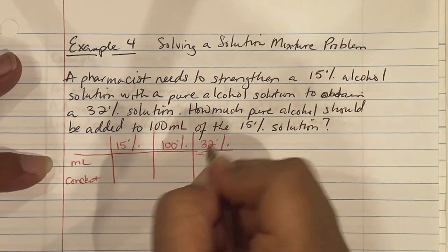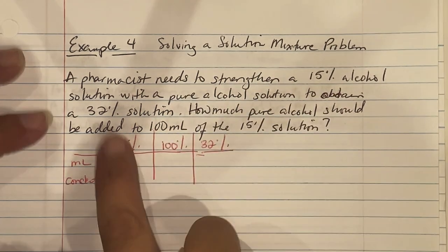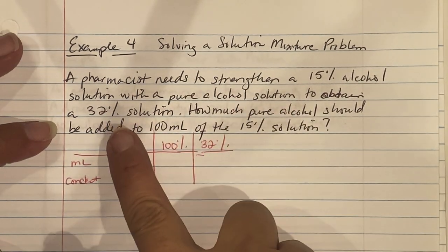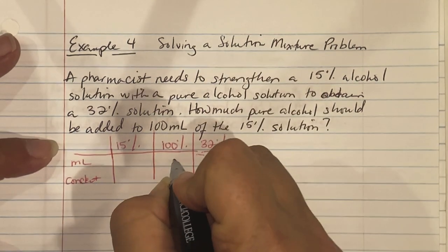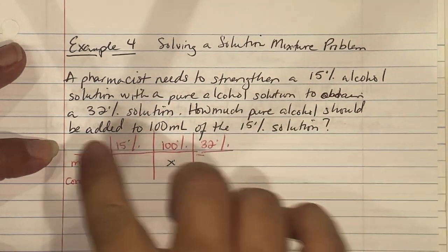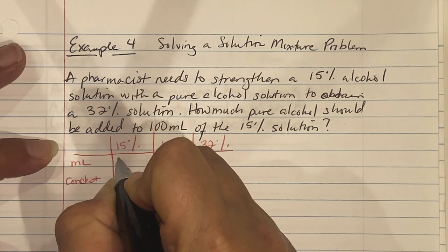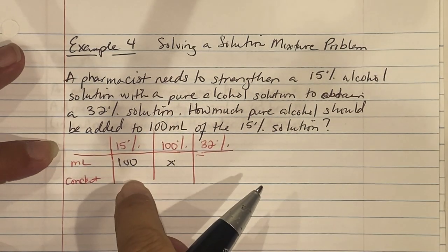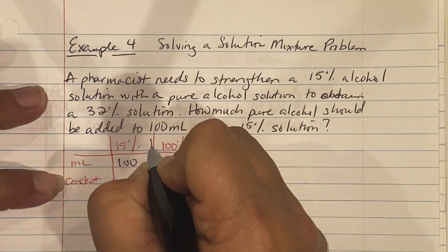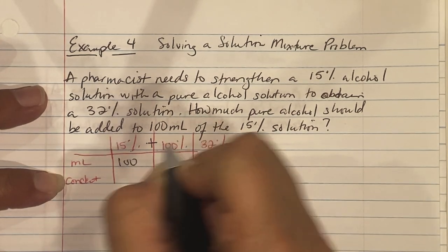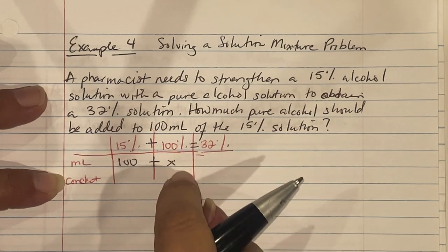They want to strengthen the 15% with pure alcohol to obtain 32%. How much pure alcohol, which means we don't know what our pure alcohol amount is, should be added to 100 mL of 15%. So we're doing 100 mL of the 15% to create our mixture. Remember, we are mixing this, so we're adding 15% with 100 to create 32%. So we are adding 100 mL with a certain amount, so we get 100 plus X.